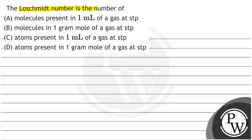Hello bachyo! Let's see this question. The Lohschmidt number is the number of molecules present in 1 milliliter of a gas at STP condition, or the molecules present in 1 gram mole of a gas at STP condition, or atoms present in 1 milliliter of a gas at STP condition, or atoms present in 1 gram mole of gas at STP condition.